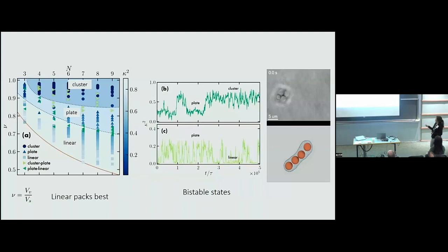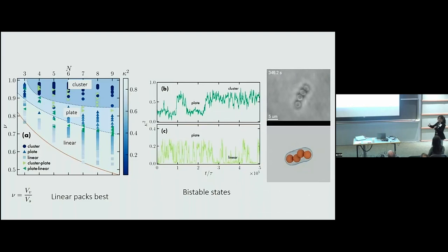We mapped out the phase diagram — with the volume of the vesicle normalized appropriately on one axis, and the number of particles in the vesicle on the other. We find that the linear arrangement packs best, having the lowest volume. But around the transition points, we really find bistable states where it can go from plate-like clusters to compact clusters, or plate-like to linear arrangements. We find those both in experiments and simulations. This reminds me of what David Limmer showed on the first day, where he needed shear to get transformations from one cluster to another. Here it's just due to the coupling of membrane fluctuations and the Brownian motion of the particles.